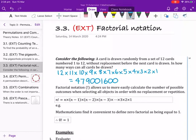So the product of consecutive whole numbers is called, for this example, 12 factorial. And this would be written as 12 with an exclamation symbol. Factorial notation allows us to more easily calculate the number of possible outcomes when selecting all objects in order with no replacement or repetition. So for n factorial, it equals n times (n-1) times (n-2) times (n-3) times dot dot dot, until we get to times 3 times 2 times 1.